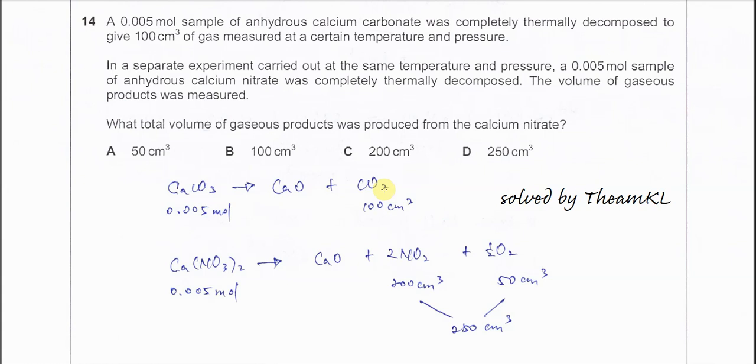Question 14: 0.005 mol of calcium carbonate was completely decomposed to give 100 cm³ of gas at certain temperature and pressure. This is unknown - we don't know the actual numbers, what is the temperature, what is the pressure.